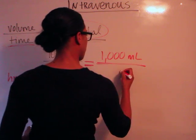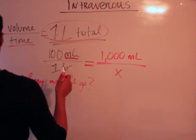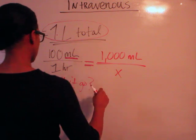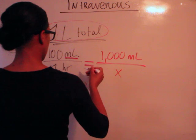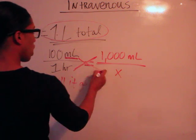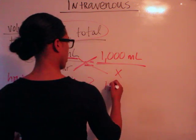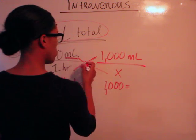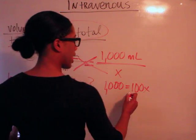And the missing variable here is time. Okay, we'll leave it like that. So let's say we cross, we cross here, and we get 1000 equals 100x, and then we solve for x.